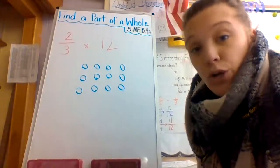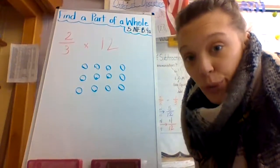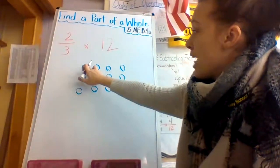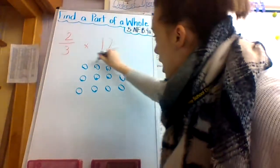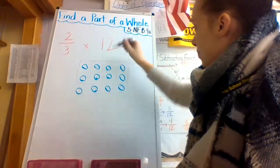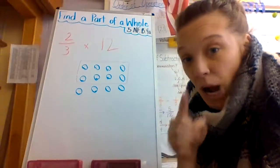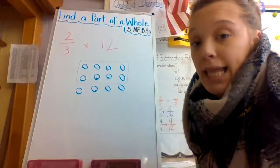Now I'm going to look at my numerator, which is two. That tells me I need to count off the first two rows of my array and I'm going to box them. Next, you're going to count how many disks are inside that box.